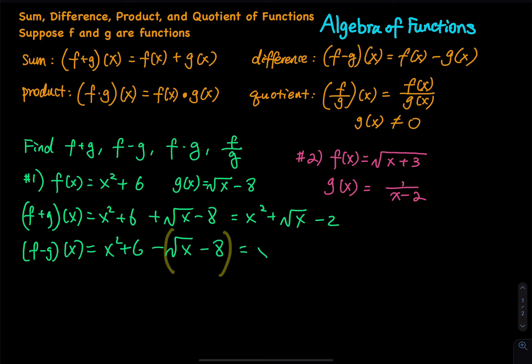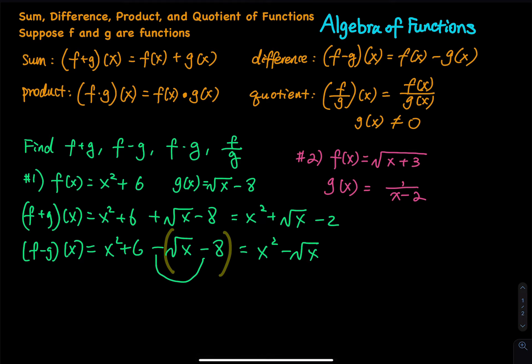So the result is x squared minus square root of x, and then six plus a — because minus minus gives a positive — so six plus a equals 14. That is for the difference.